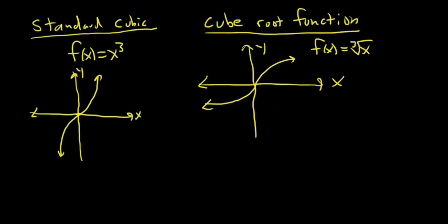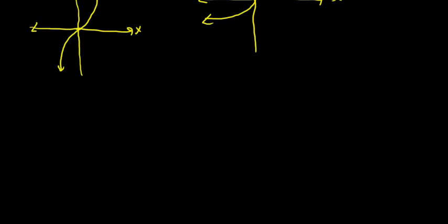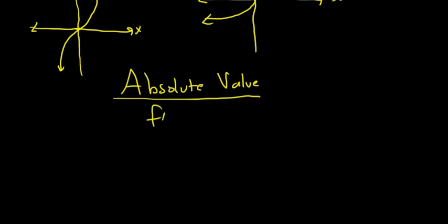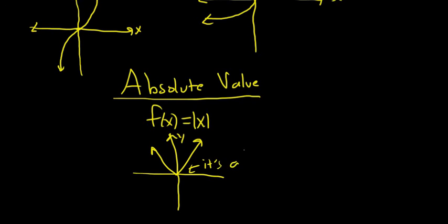And the very last one that's important and important to know is my favorite one. It's the absolute value function. So f of x equals the absolute value of x. And this one looks like a v. The absolute value function is a v. Whereas x squared is a u.